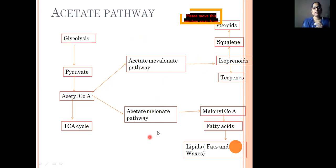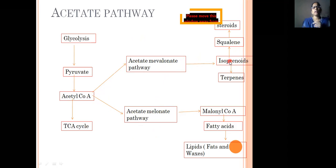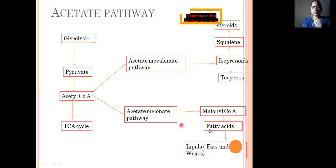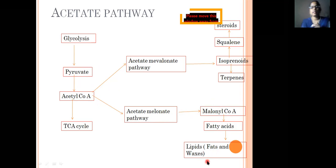In the acetate-mevalonate pathway, isoprenoids and terpenes are produced — terpenes being the oxygenated products, while isoprenoids contain only carbon and hydrogen. Isoprenoids also produce squalene, from which steroids are derived. In the acetate-malonate pathway, malonyl-CoA is involved along with acetyl-CoA, leading to the formation of fatty acids like lipids, waxes, and fats.